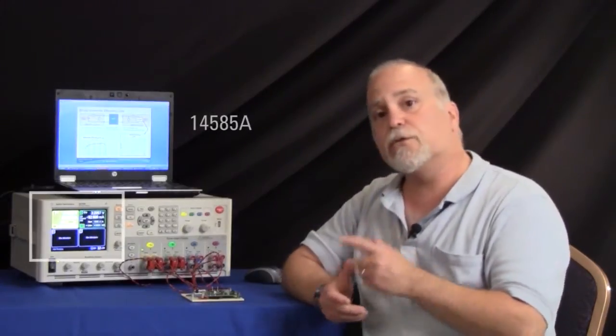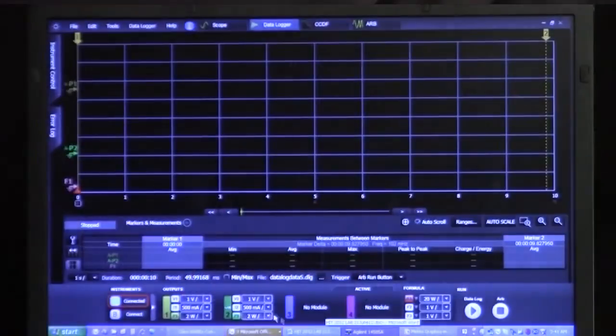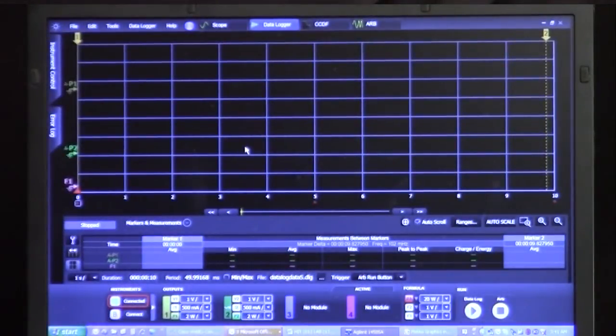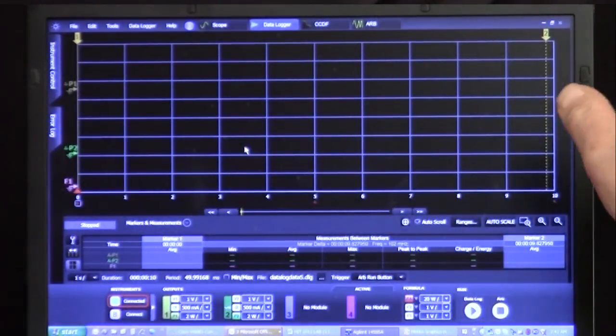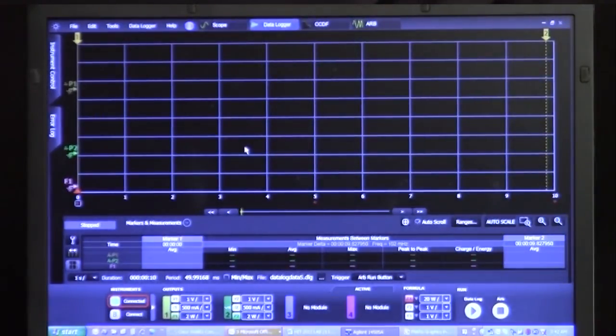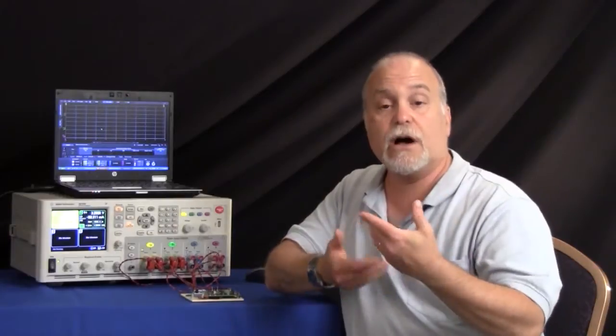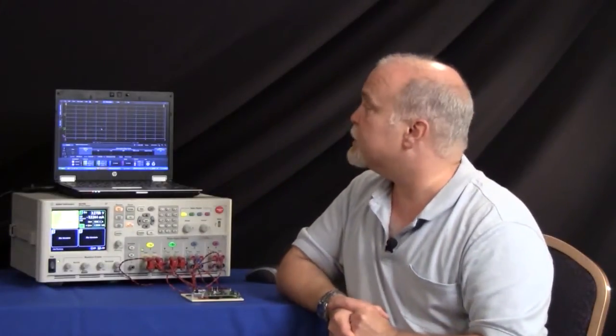We're going to use some software to do that. It's the 14585 software, and I'm going to bring up that software right now. So on the screen here is a data logger screen. It's a grid, and it's going to sweep. It's going to take 10 seconds to do this sweep, and we're going to see the power in, power out, and a formula, which is another feature of the software that allows you to do calculations on the traces. And we're going to have a formula that is the efficiency, the ratio of power in to power out, so that we can see the efficiency of the DC to DC converter.